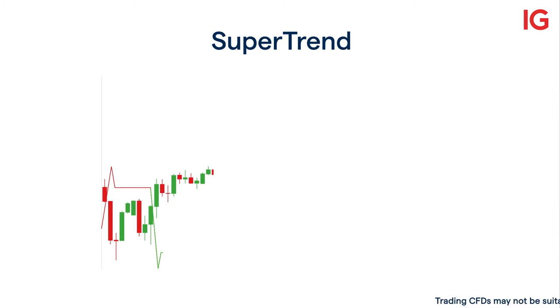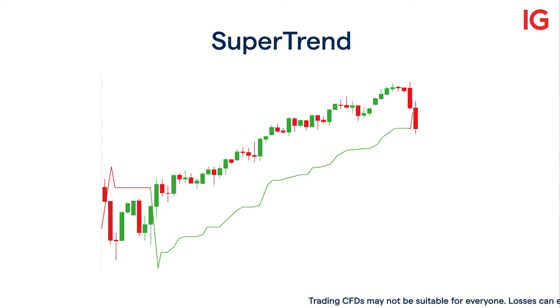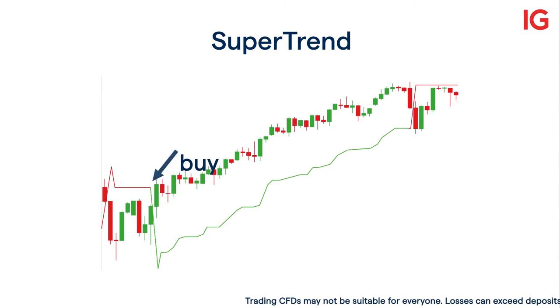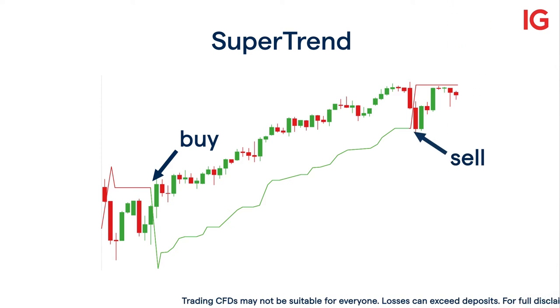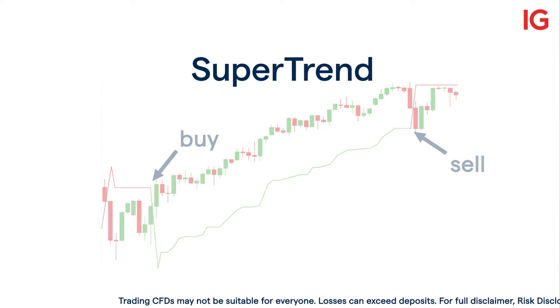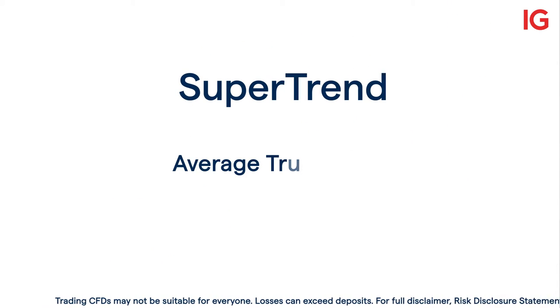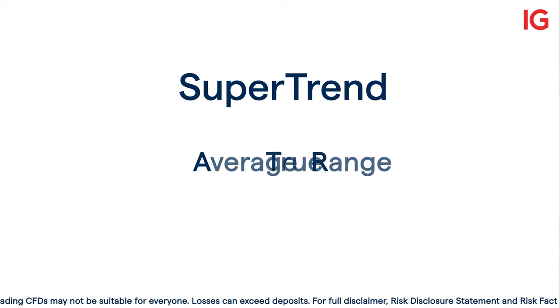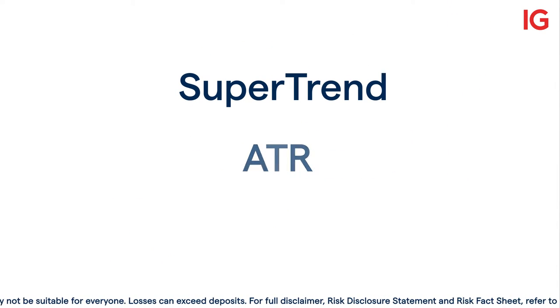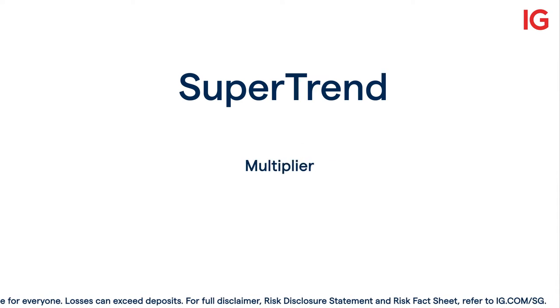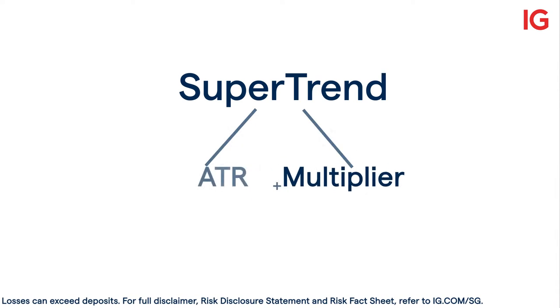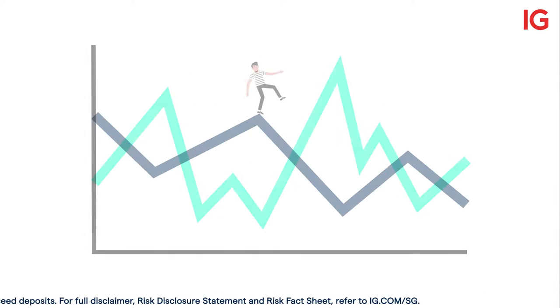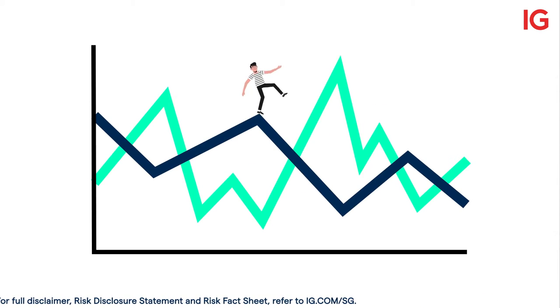Supertrend is a technical indicator that allows you to identify trends and provides both buy and sell signals. It incorporates average true range, otherwise known as ATR, and a multiplier in its formula, which essentially accounts for market volatility.